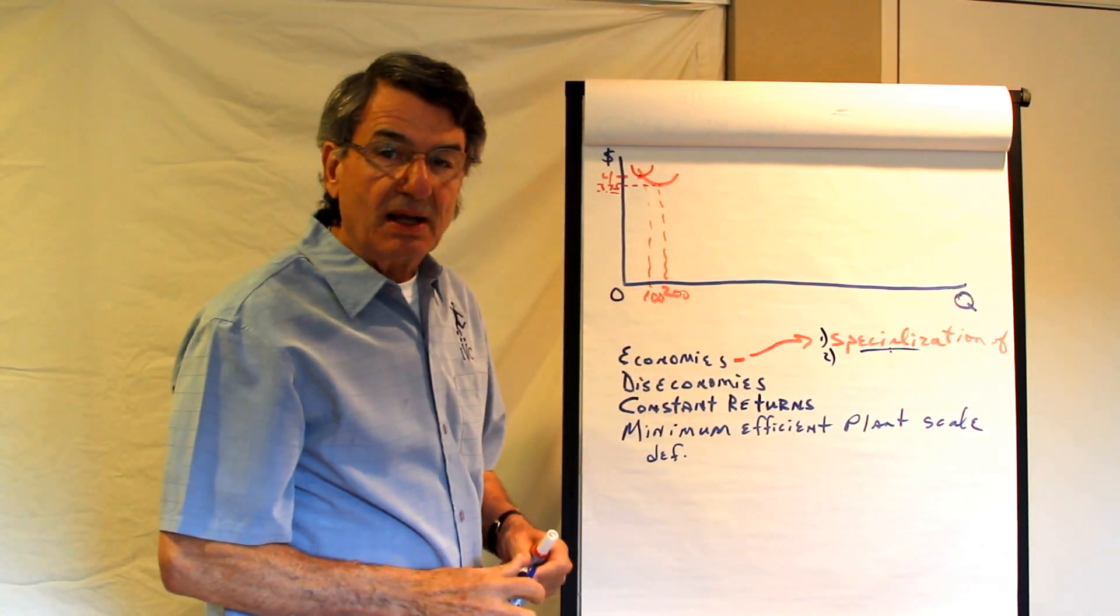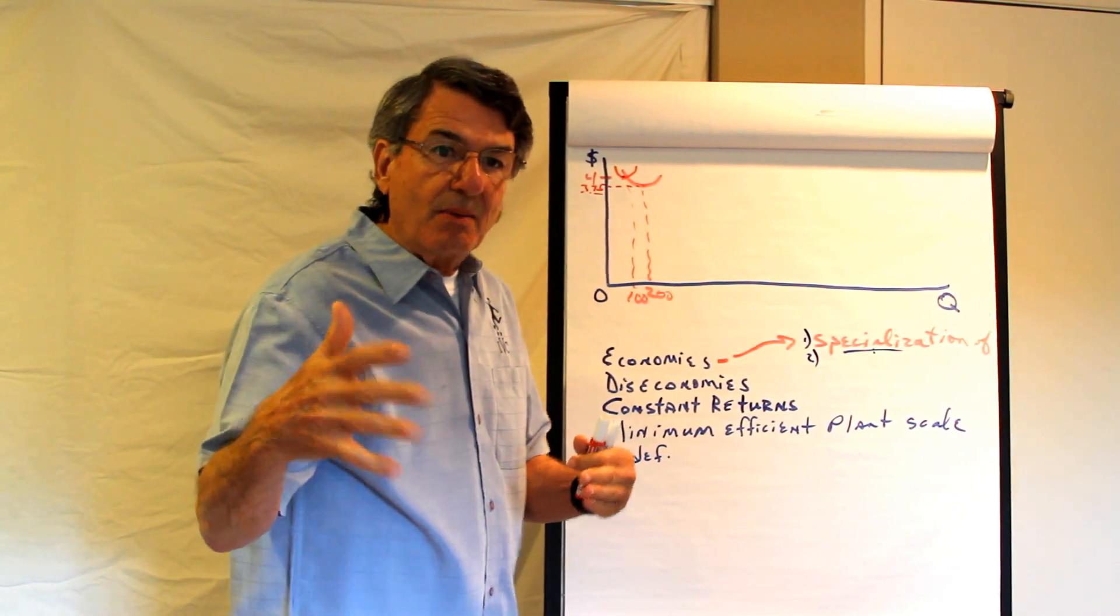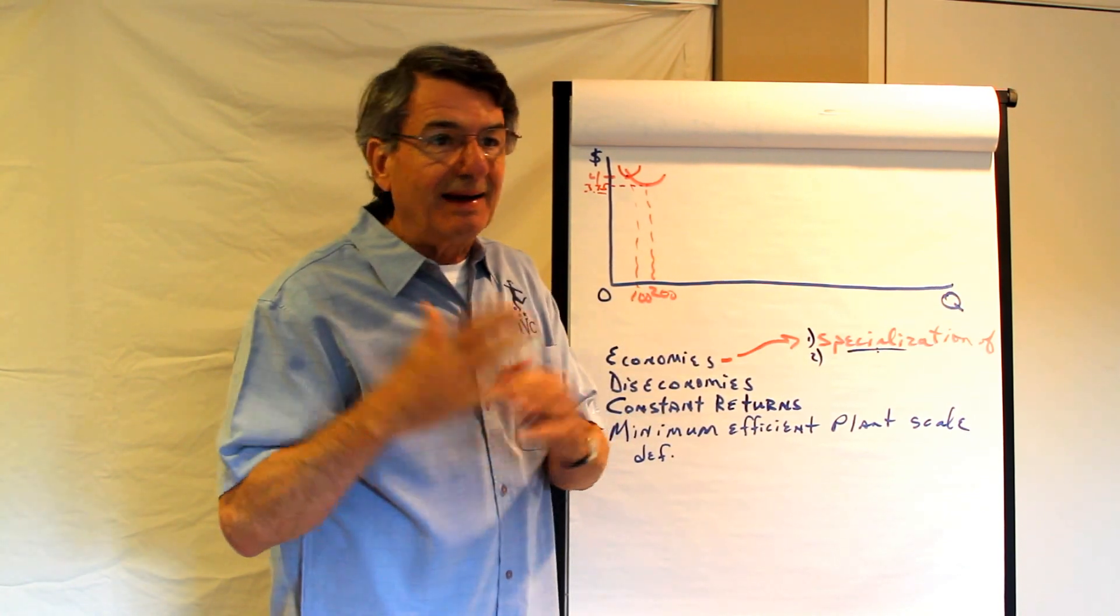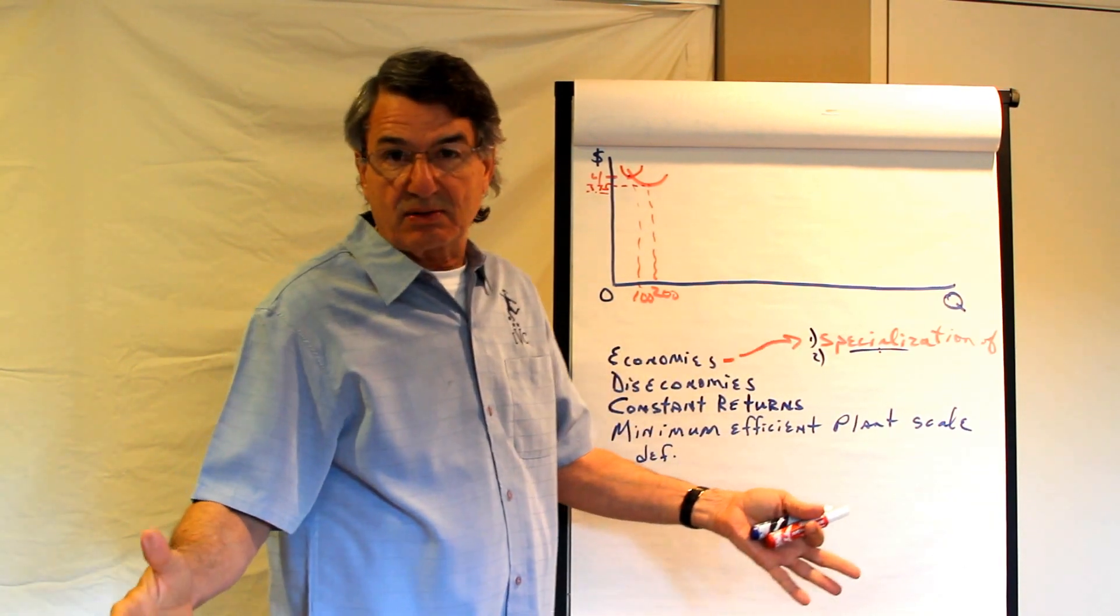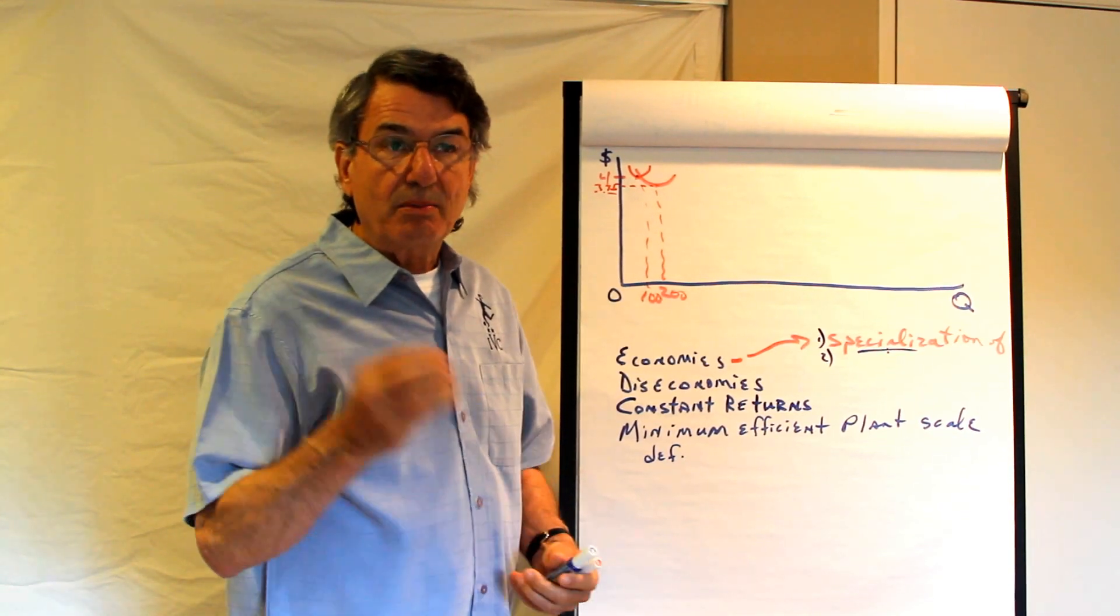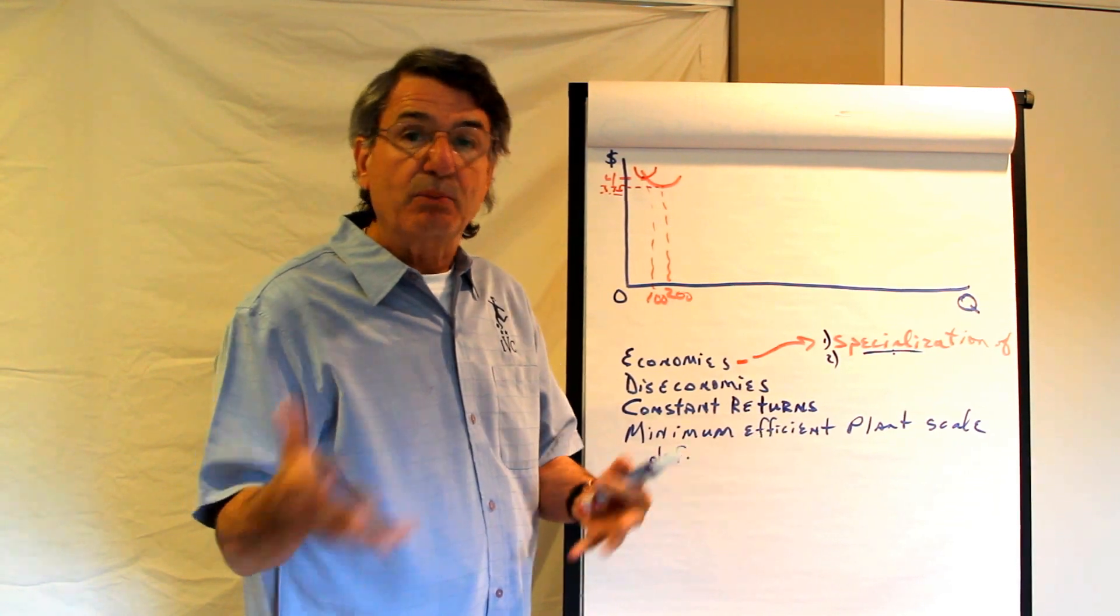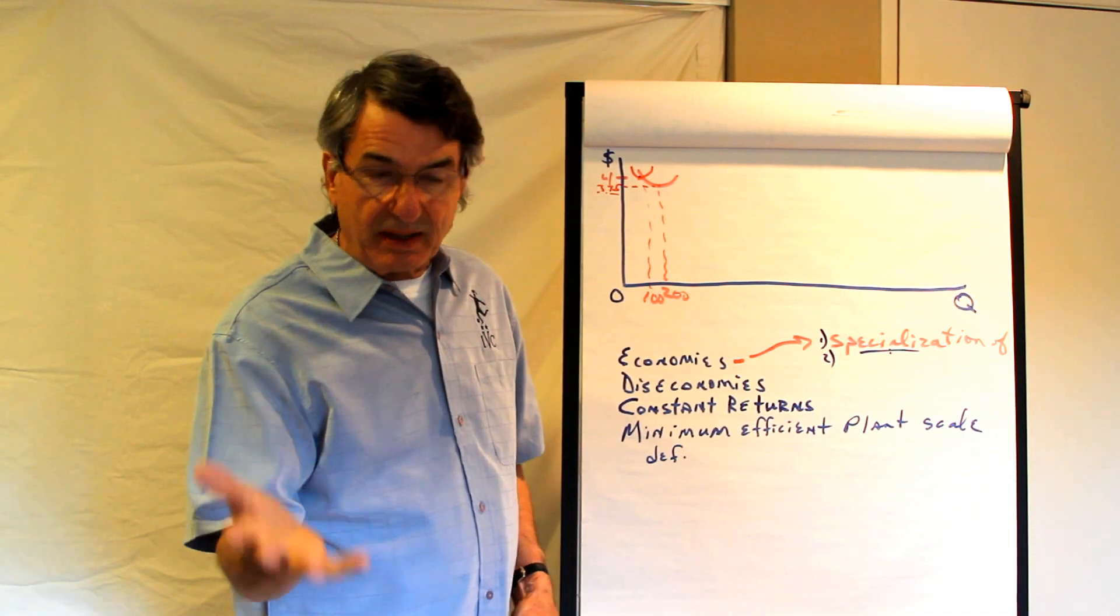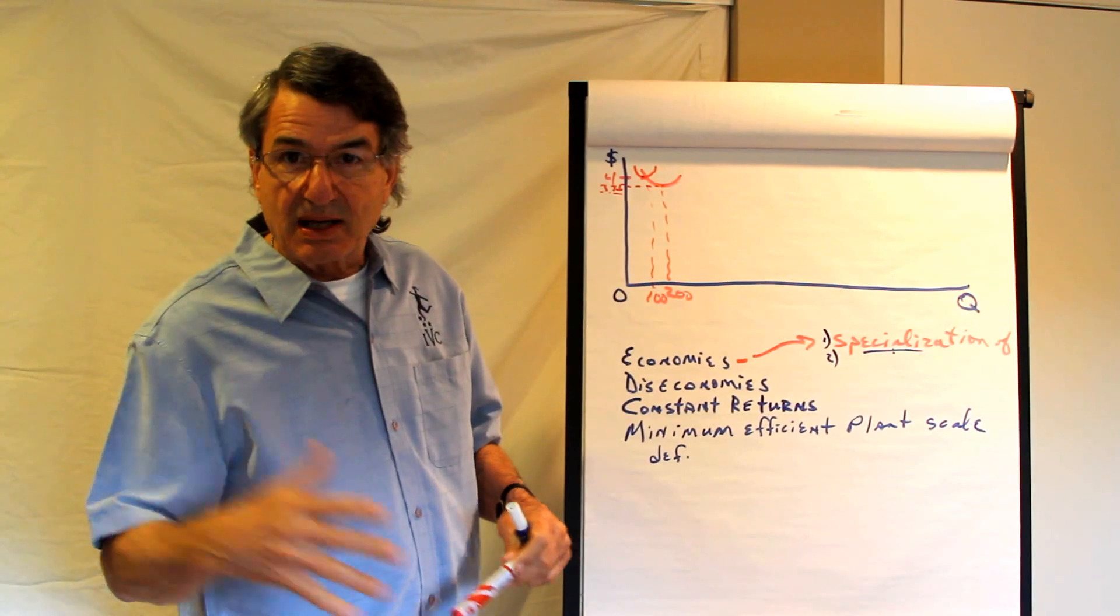The second has to do with byproducts. When the scale of production gets bigger, byproducts oftentimes turn from an economic liability to an economic asset. An example, old lumber mills used to have sawdust that became a hazard and a cost to get rid of. But as they got bigger and bigger it became beneficial for them to use these byproducts as inputs into the production of something else. And all of a sudden what used to be an economic liability can turn into an economic asset. When that happens, costs per unit go down as the scale of plant gets bigger.